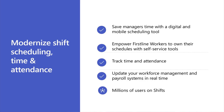The time tracking component — the time clock module within the Shifts application — is the API we're going to be talking about today. That provides employees quick clock in and clock out capabilities so they can clock in and out of their shifts. They can add breaks, go back and edit their time cards, and then the manager can view that and push it to their payroll system for payroll processing.